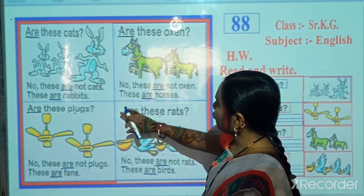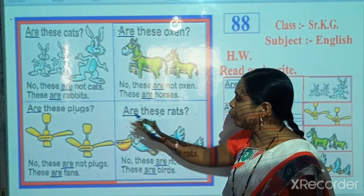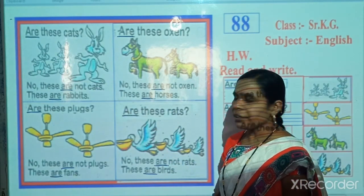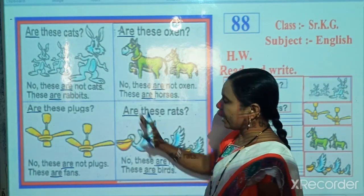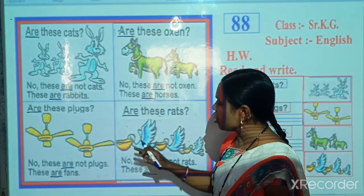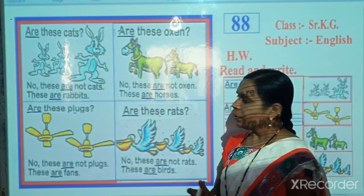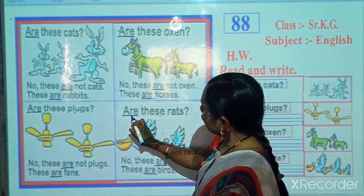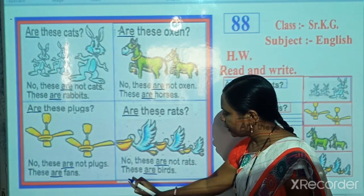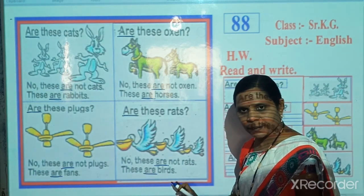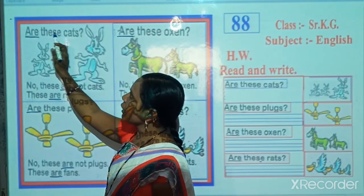Look carefully — when we ask a question about this object, that time we use 'Are'. And when we reply about this object, that time also we use 'Are'. Both times we use 'Are' because here are more than one object. Now read: Are these rats? No, these are not rats. These are birds.